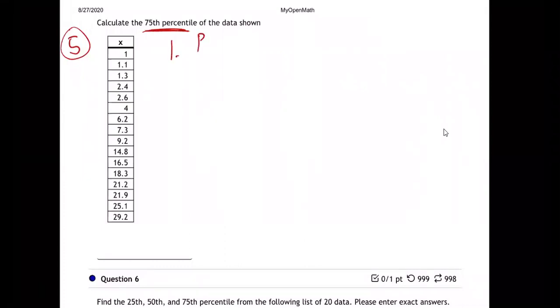Step one, take P over 100 times N. So this is going to equal P, which is 75. That's the P over 100 times. And N is the total number of values, right? How many values are there? Let's number them.